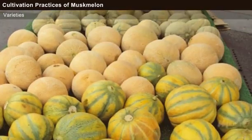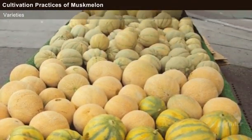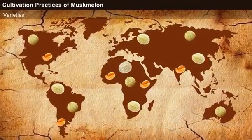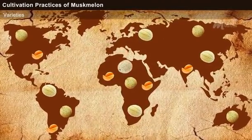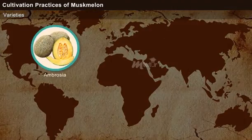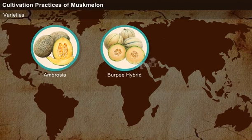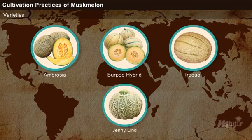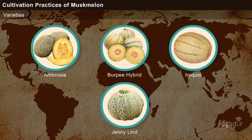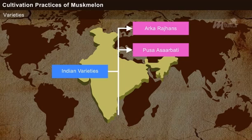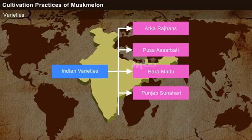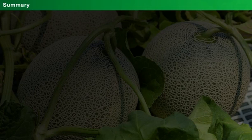Varieties. Several varieties of muskmelon are being cultivated across the world. Some of the common varieties grown worldwide include Ambrosia, Bhavi Hybrid, Iroquois and Jenny Lint. Some of the common Indian varieties include Arca Rajhans, Pusa Asarbeti, Hara Medu, Punjab Sunahari and Haribari.